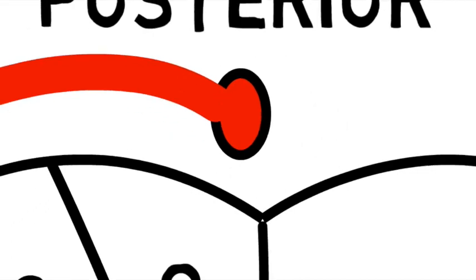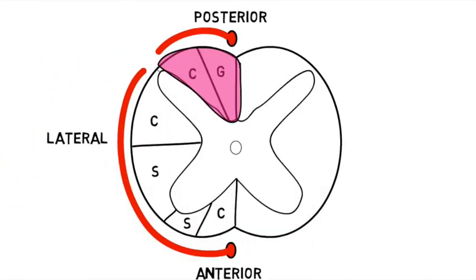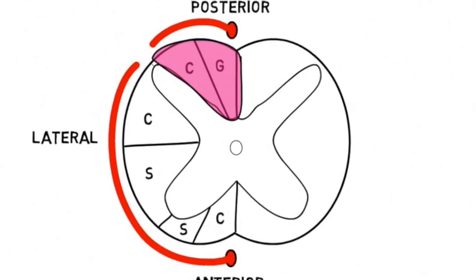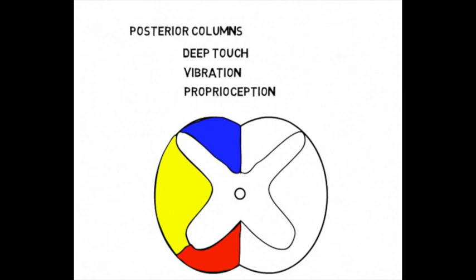So let's have a look at the posterior cord syndrome. For example, the damage to the posterior spinal artery, which will take out your gracilis and cuneatus, your posterior columns. Using Dirty Dave story, this will lose deep touch, vibration, and proprioception.